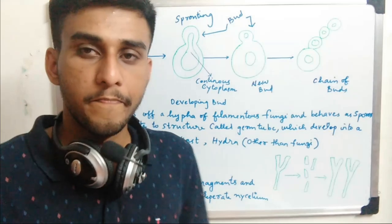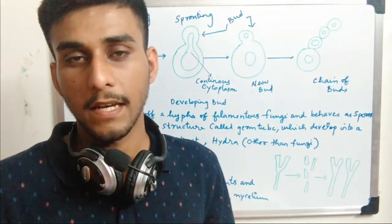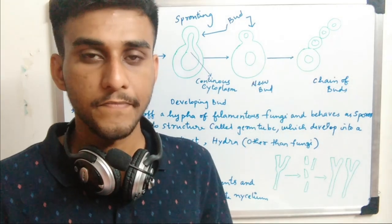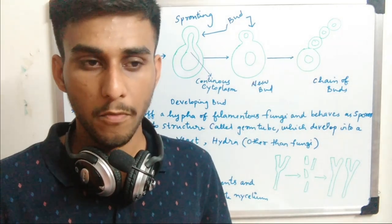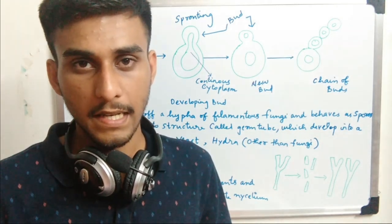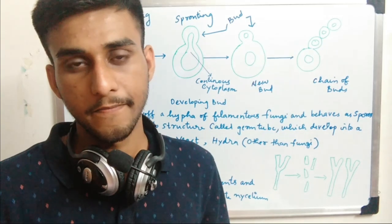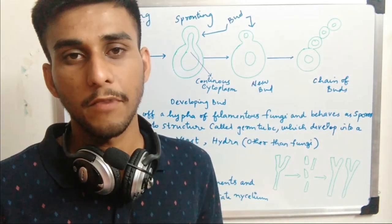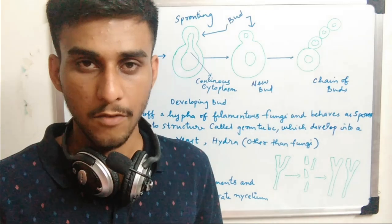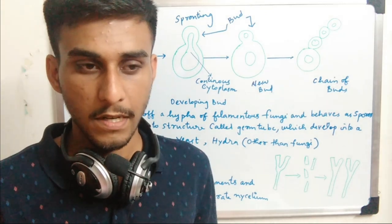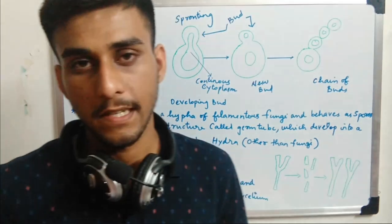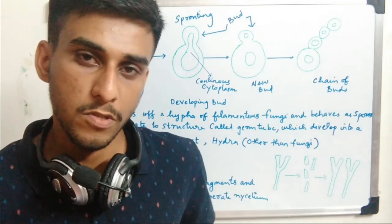Now we will discuss in detail each classification of reproduction. First is budding. Budding is the formation of a bud in a cell and is usually seen in unicellular organisms like yeast — specifically baker's yeast, Saccharomyces cerevisiae. Budding is also seen in some filamentous fungi.